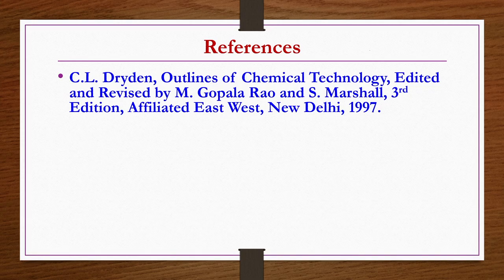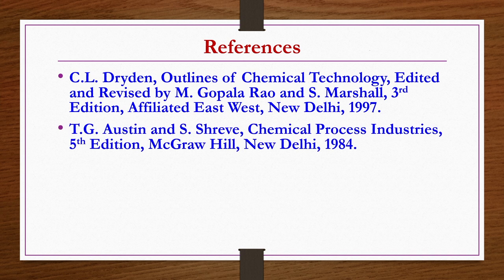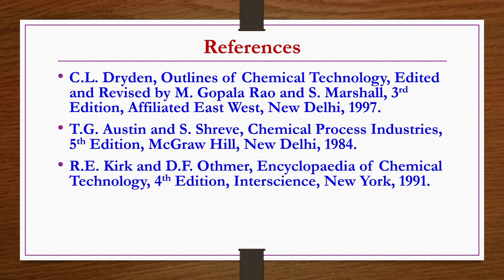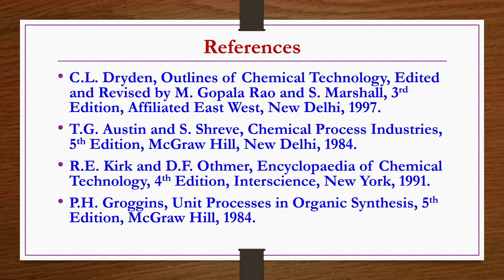With this we complete the chapter on synthetic chemicals production from C3 and C4 compounds. References for today's lecture: Outlines of Chemical Technology by Dryden, edited and revised by Gopalrao and Marshall, third edition; Chemical Process Industries by Austin and Shreve, fifth edition; Encyclopedia of Chemical Technology by Kirk and Othmer, fourth edition; Unit Processes in Organic Synthesis by Groggins, fifth edition. Thank you.